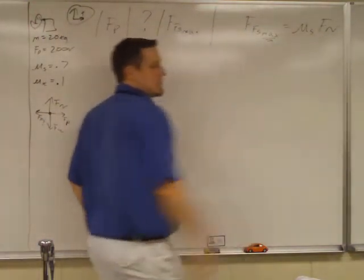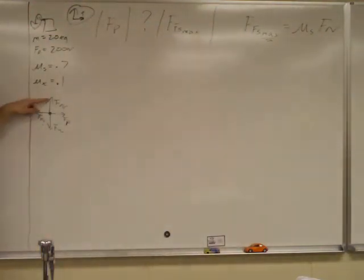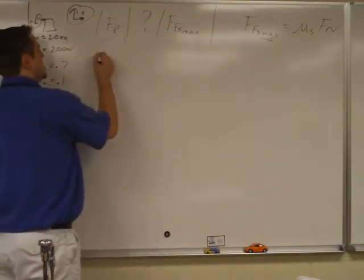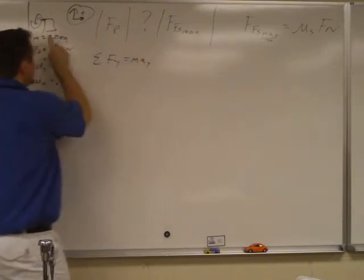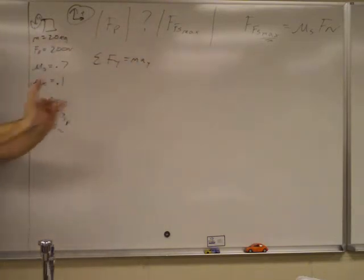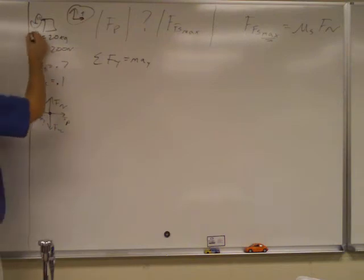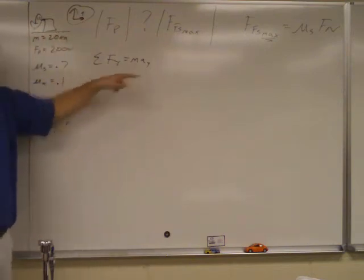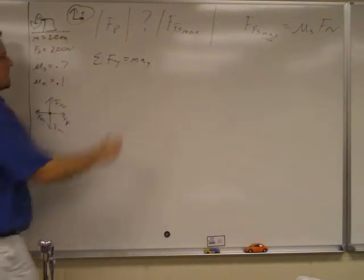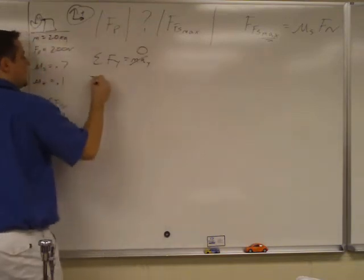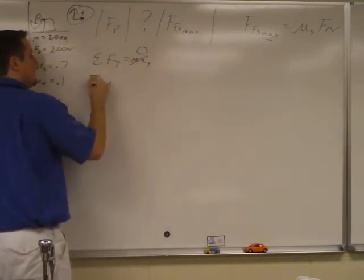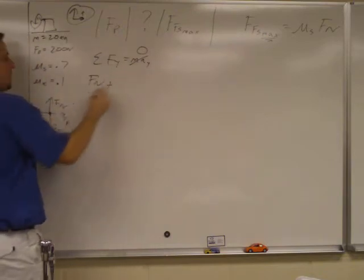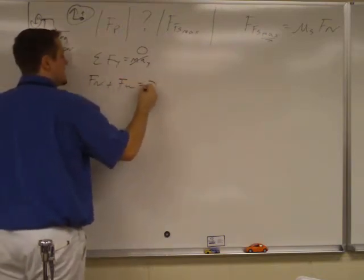So how are we going to get the normal force? Since it's not given, look at your free body diagram. It's in the y direction. So we are going to sum the forces in the y direction. And is this based on my picture? It's being pushed on horizontally on a flat surface. Is there any acceleration in the y direction? No. So we put a zero. The normal force plus the weight equals zero.